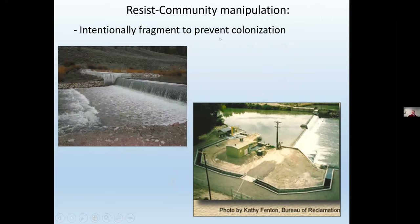We might also intentionally fragment the system to prevent colonization — the reverse of enhancing connectivity. Here's a gabion barrier put on Barge Creek in Wyoming, where native cutthroat are upstream and invasive brook trout and rainbow trout are downstream. The upstream area was reclaimed with rotenone and restocked with native fish, and this barrier has been successful in preventing recolonization. Here's another example on the Gunnison River — a fish ladder that circumvents a barrier, where fish get caught in a holding tank. Biologists can periodically sort them, putting desirable species back in the river and removing undesirable ones. This is sort of the ultimate in having your cake and eating it too — fragmenting the system against invasive species while promoting connectivity for desirable species.